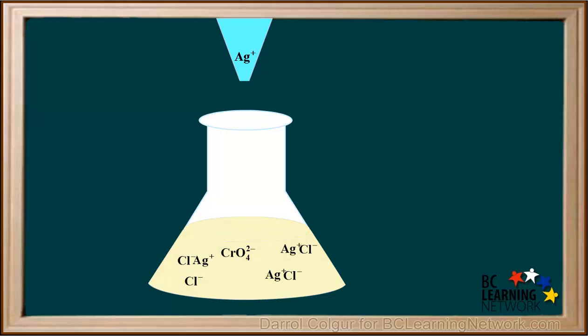The solution will turn red momentarily as more silver is added, but as long as chloride is still present, shaking the flask will make the red color disappear.